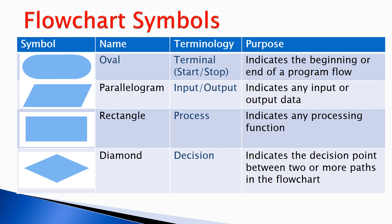The second symbol is the parallelogram, which represents the input or output of an algorithm. The rectangle is used in a flowchart to represent a process — for example, when we take input from the user of two numbers a and b and need to add them, the rectangle is used to represent the addition process. Another symbol is the diamond, used for decision making when we have two cases or other decision-making scenarios.